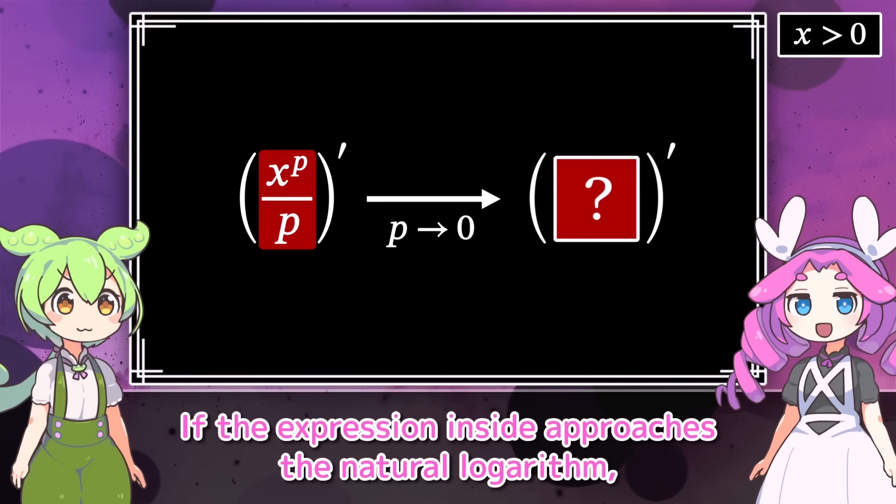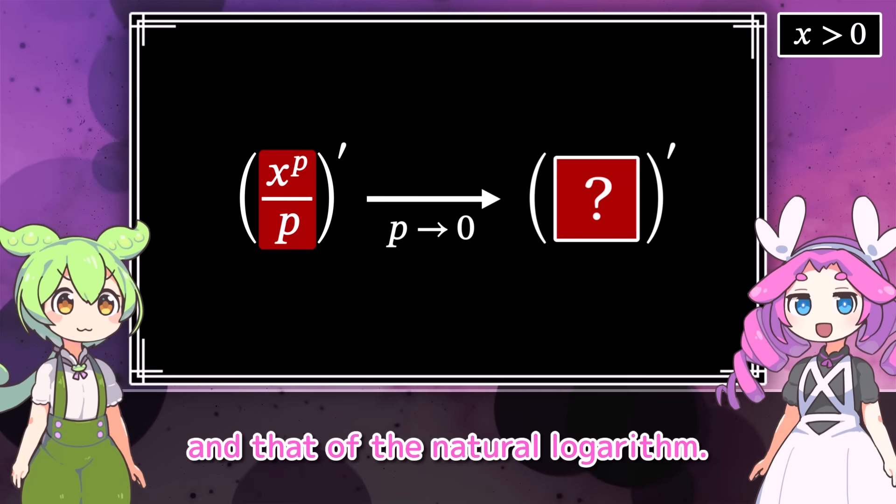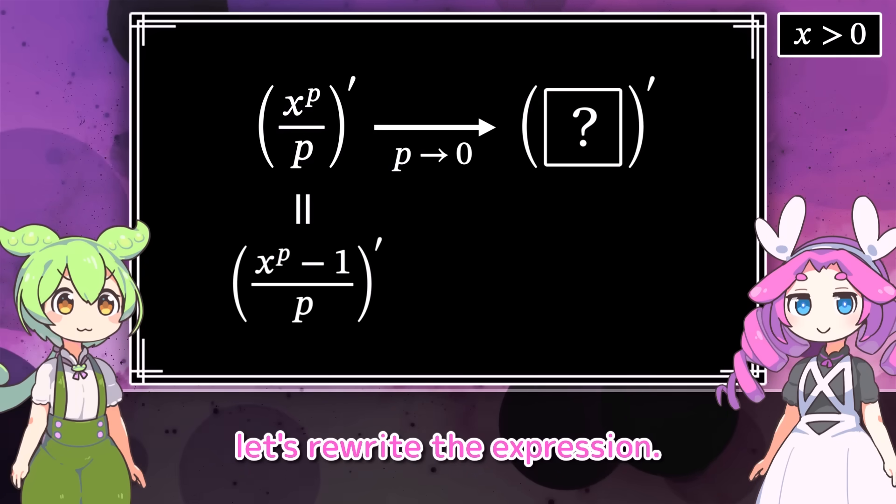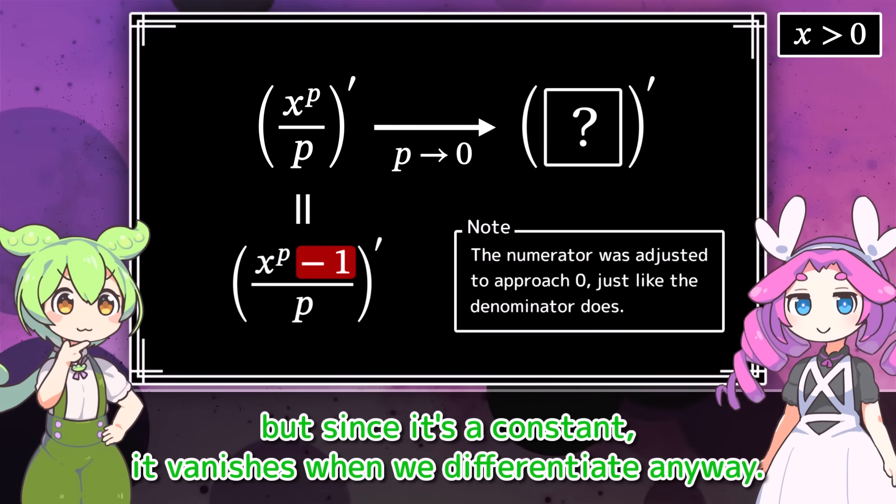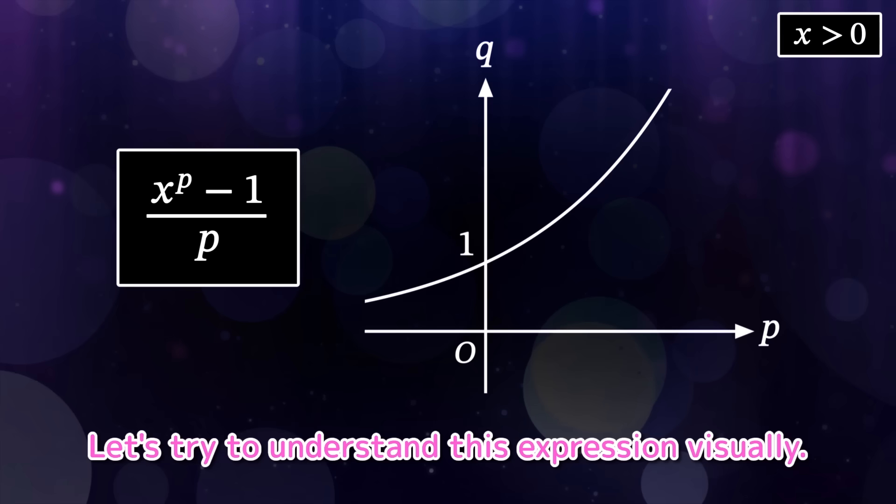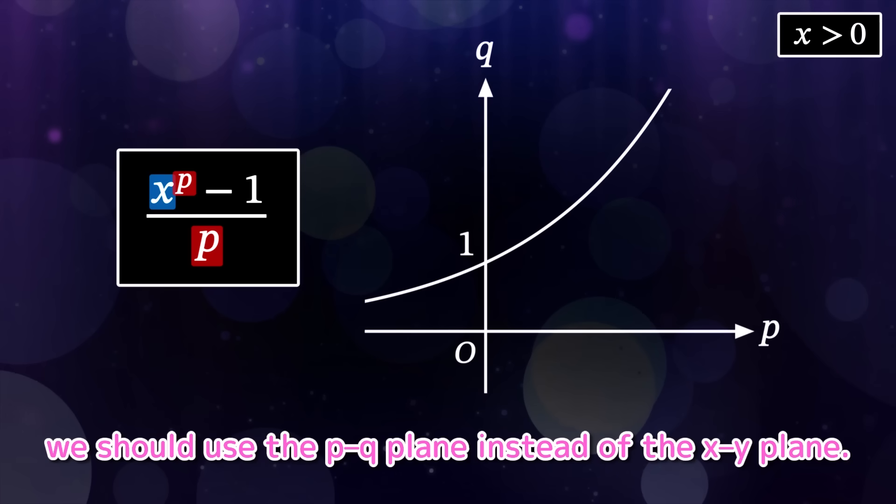What we want to know right now is this limit. Yeah. If the expression inside approaches the natural logarithm, then we might see a connection between the derivative of powers and that of the natural logarithm. Now, instead of calculating the limit directly, let's rewrite the expression. Ah, negative 1 appeared here, but since it's a constant, it vanishes when we differentiate anyway. Actually, this is a famous form. Really?